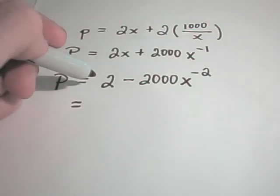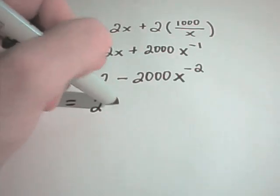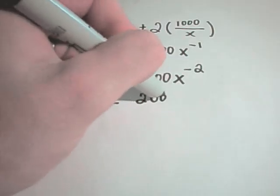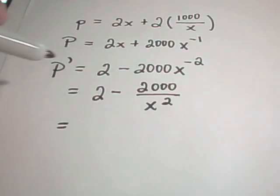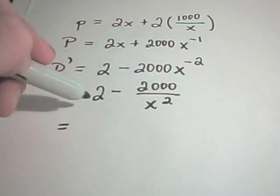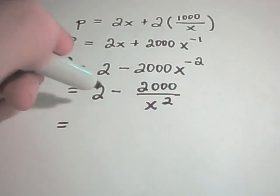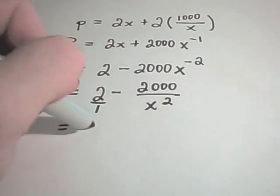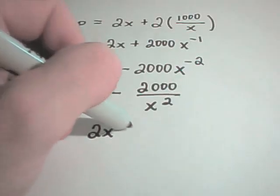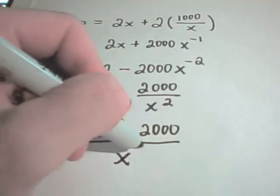Now we have to find the critical numbers of this equation. I'm going to write this as 2 minus 2000 over X squared. When finding critical numbers I like to group things into a single fraction. If I multiply top and bottom of the first term by X squared, I'll get 2X squared minus 2000 all over X squared.